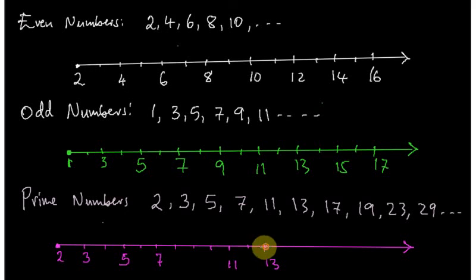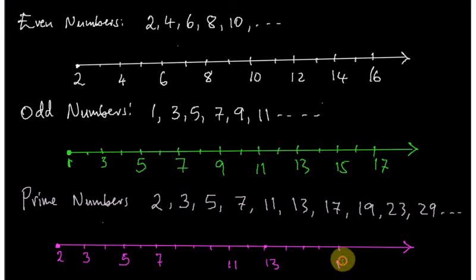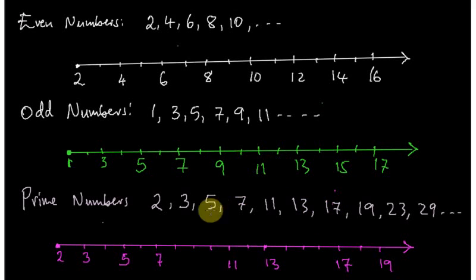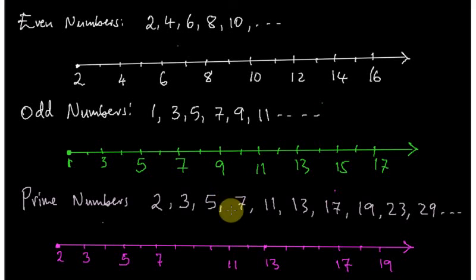We don't have 14, 15, or 16 but we have 17. We don't have 18 but we have 19, and so on. This is how we show prime numbers on a number line. So we have shown even numbers, odd numbers, and prime numbers on a number line. Hope this is clear — thank you for watching and please join me in the next tutorial.